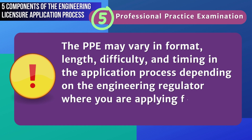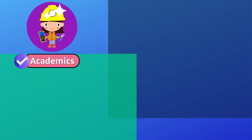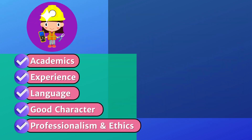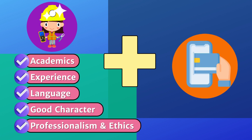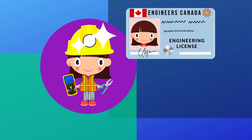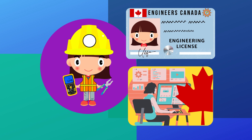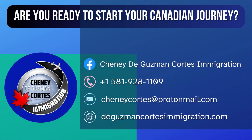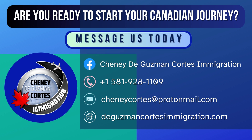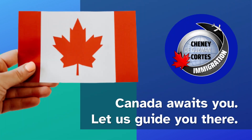Once you meet all the requirements we have discussed and pay the necessary fees, you will receive your license and be able to practice engineering independently and legally in Canada. Are you ready to start your Canadian journey? Message us today so we can assess your credentials and find the most suitable pathway to immigrate and acquire permanent residency status in Canada as an engineer. Canada awaits you — let us guide you there.